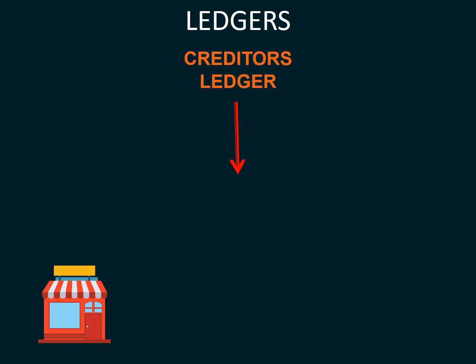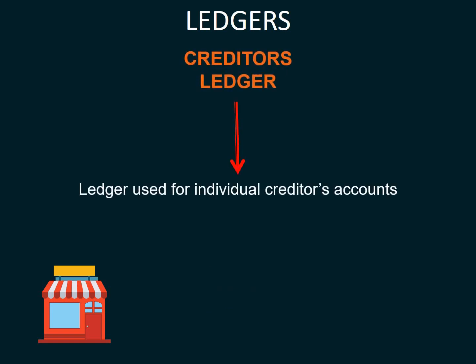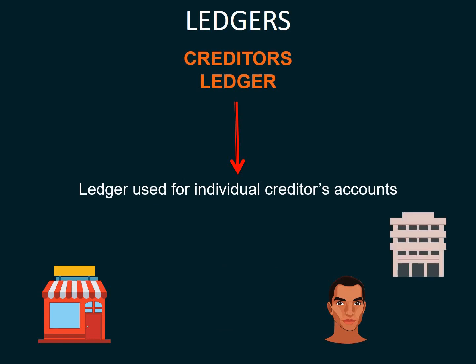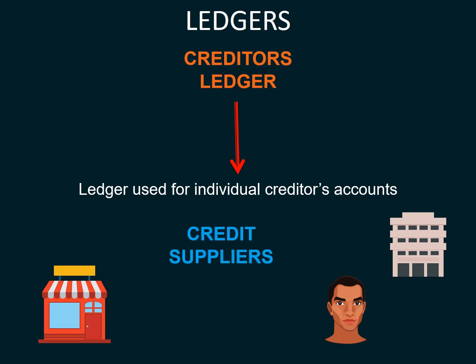The creditor's ledger is a ledger used for individual creditor's accounts. This can be an individual or a business that we buy on credit from, meaning we do not pay with cash but buy on credit. These are our credit suppliers, from whom we do credit purchases.